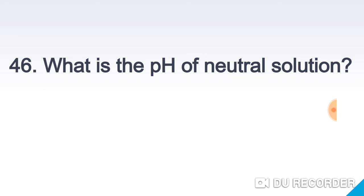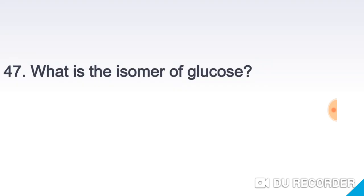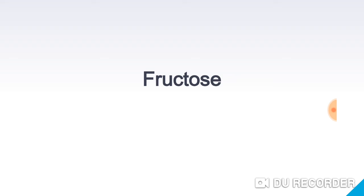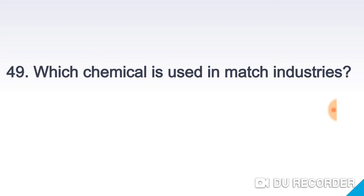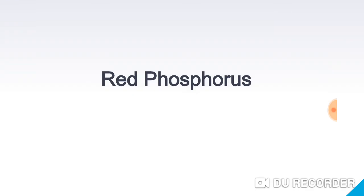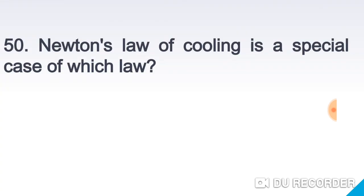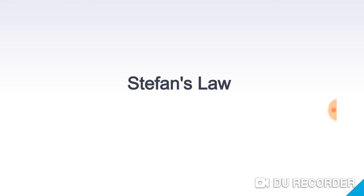What is the pH of neutral solution? 7. What is the isomer of glucose? Fructose. Who discovered hydrogen? Cavendish. Which chemical is used in match industries? Red phosphorus. Newton's law of cooling is a special case of which law? Stefan's law.